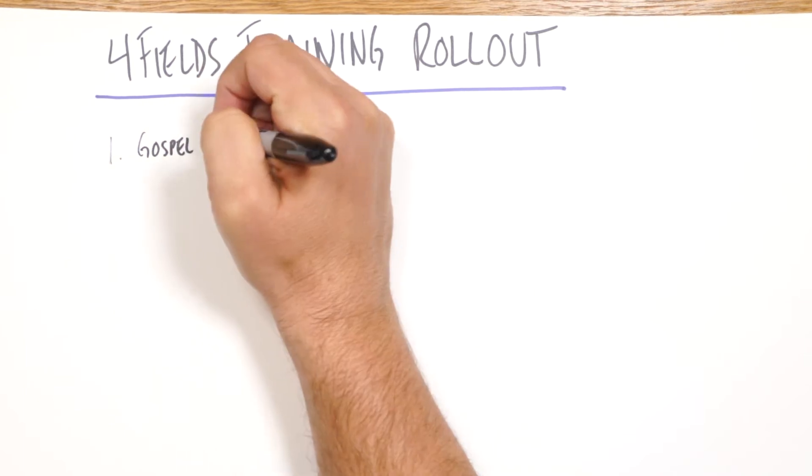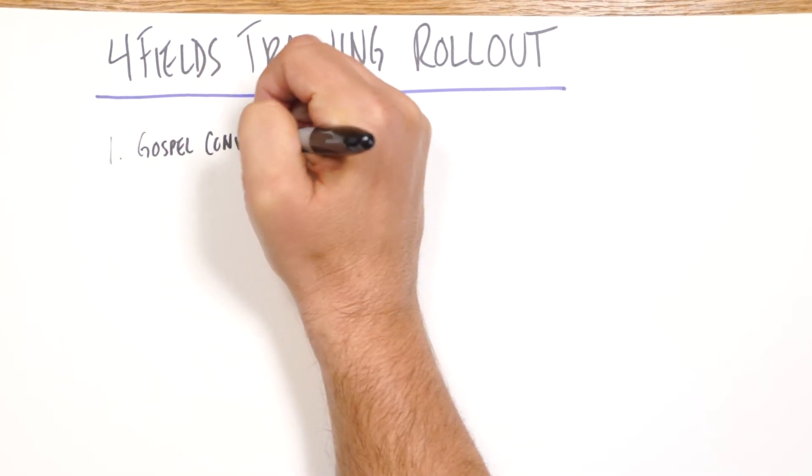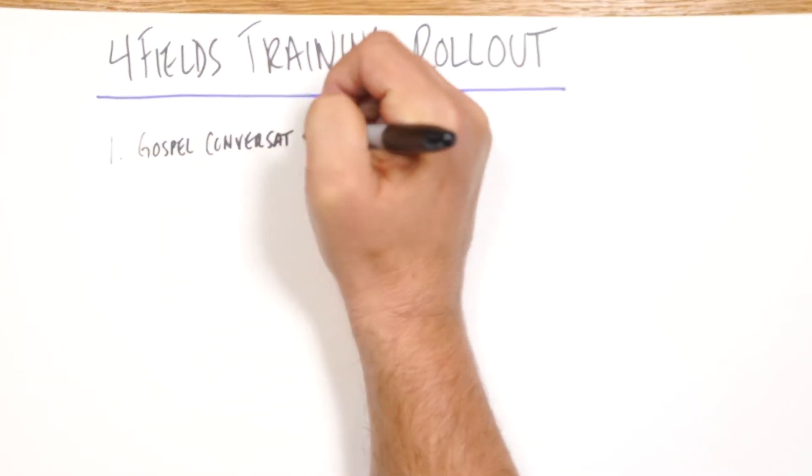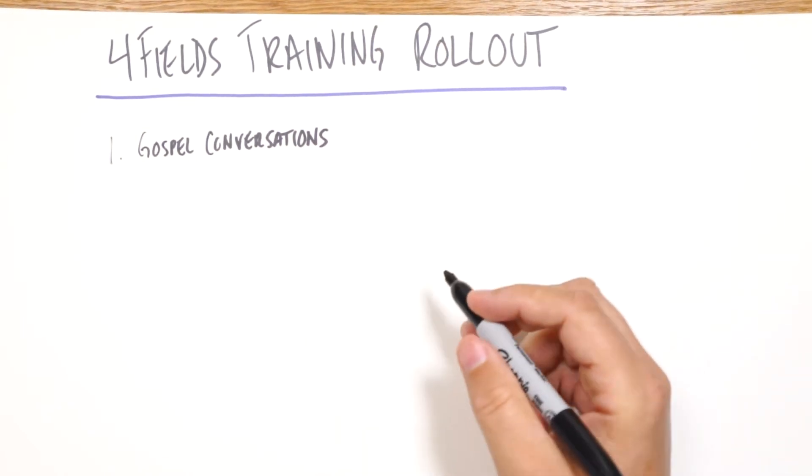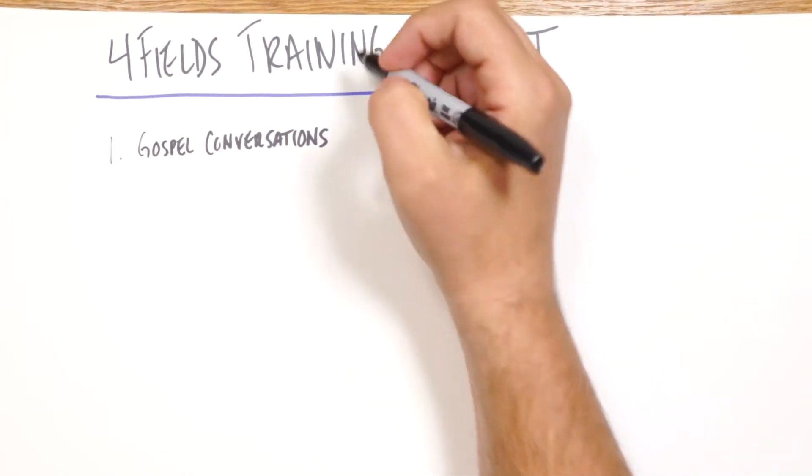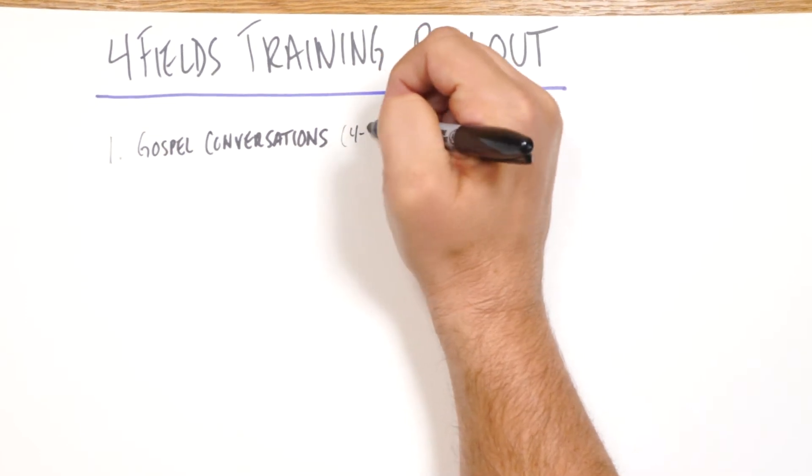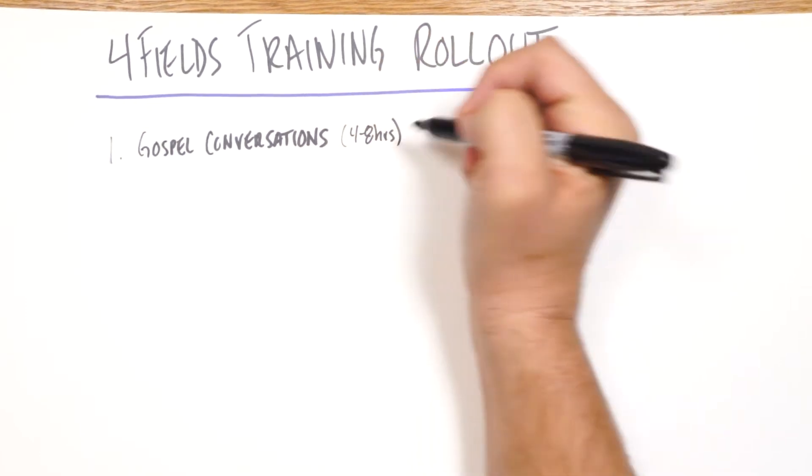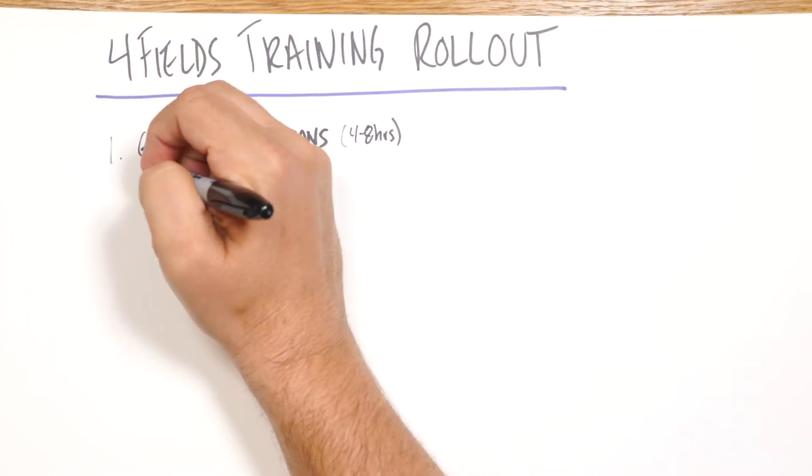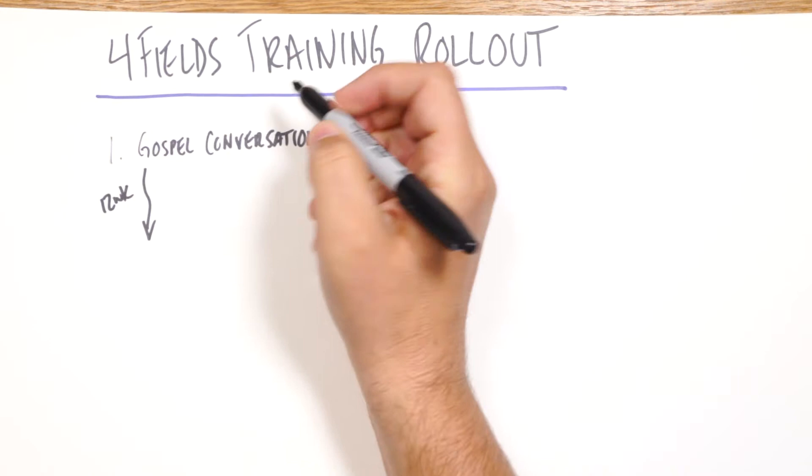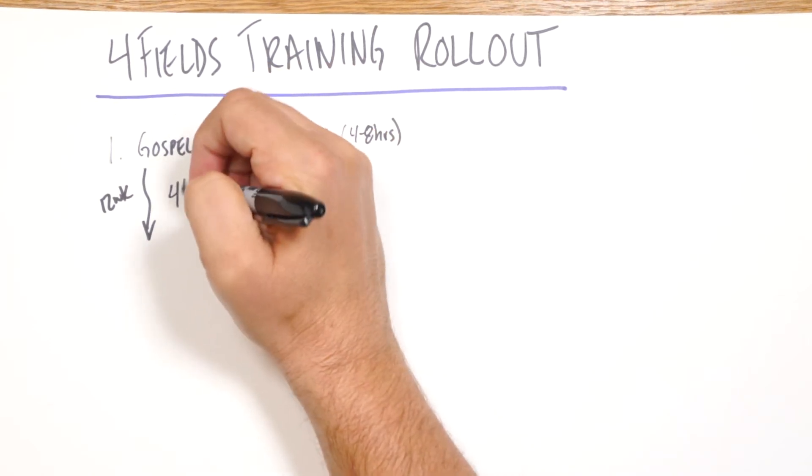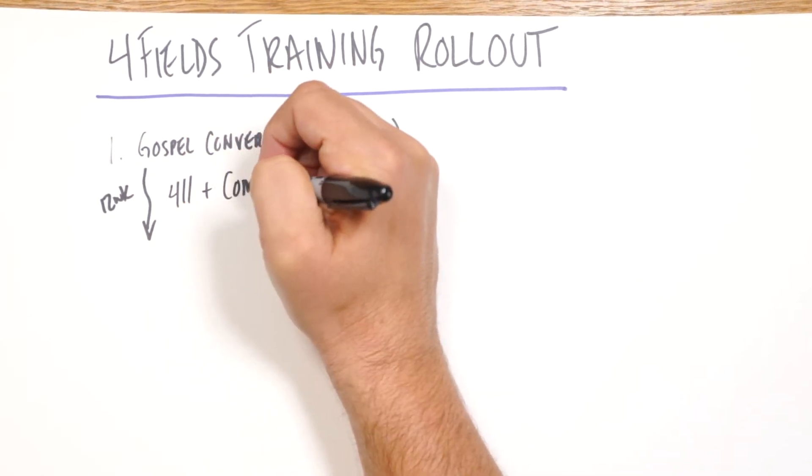Many are calling this a gospel conversations, which is just simply giving them the tools they need to be with some vision, how to share the gospel, how to begin discipling somebody. And so this is anywhere from four to eight hours, depending on if you include harvest time or not. Followed up by the first 12-week rollout of what we're using is the 411 plus the Commands of Christ.